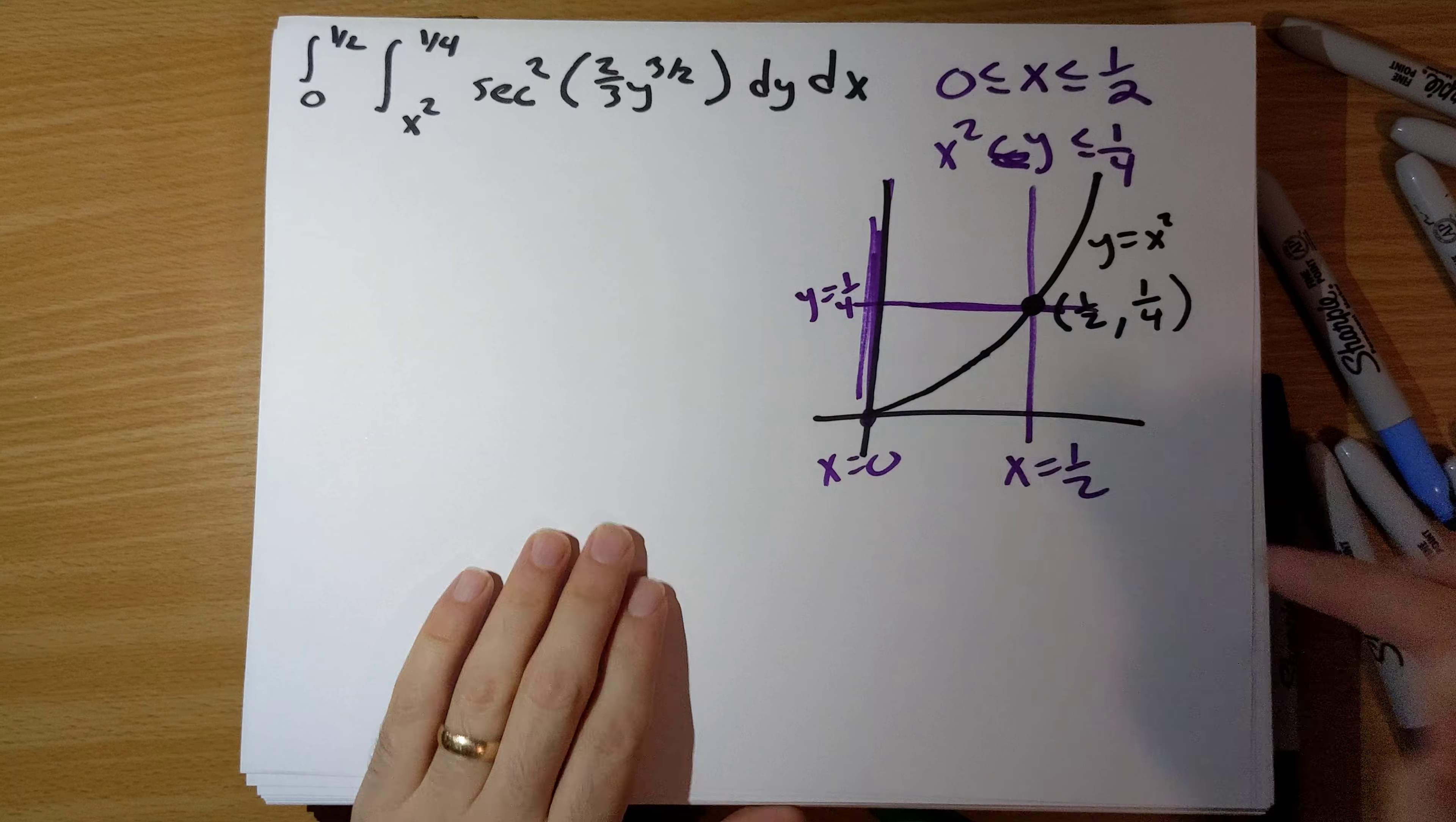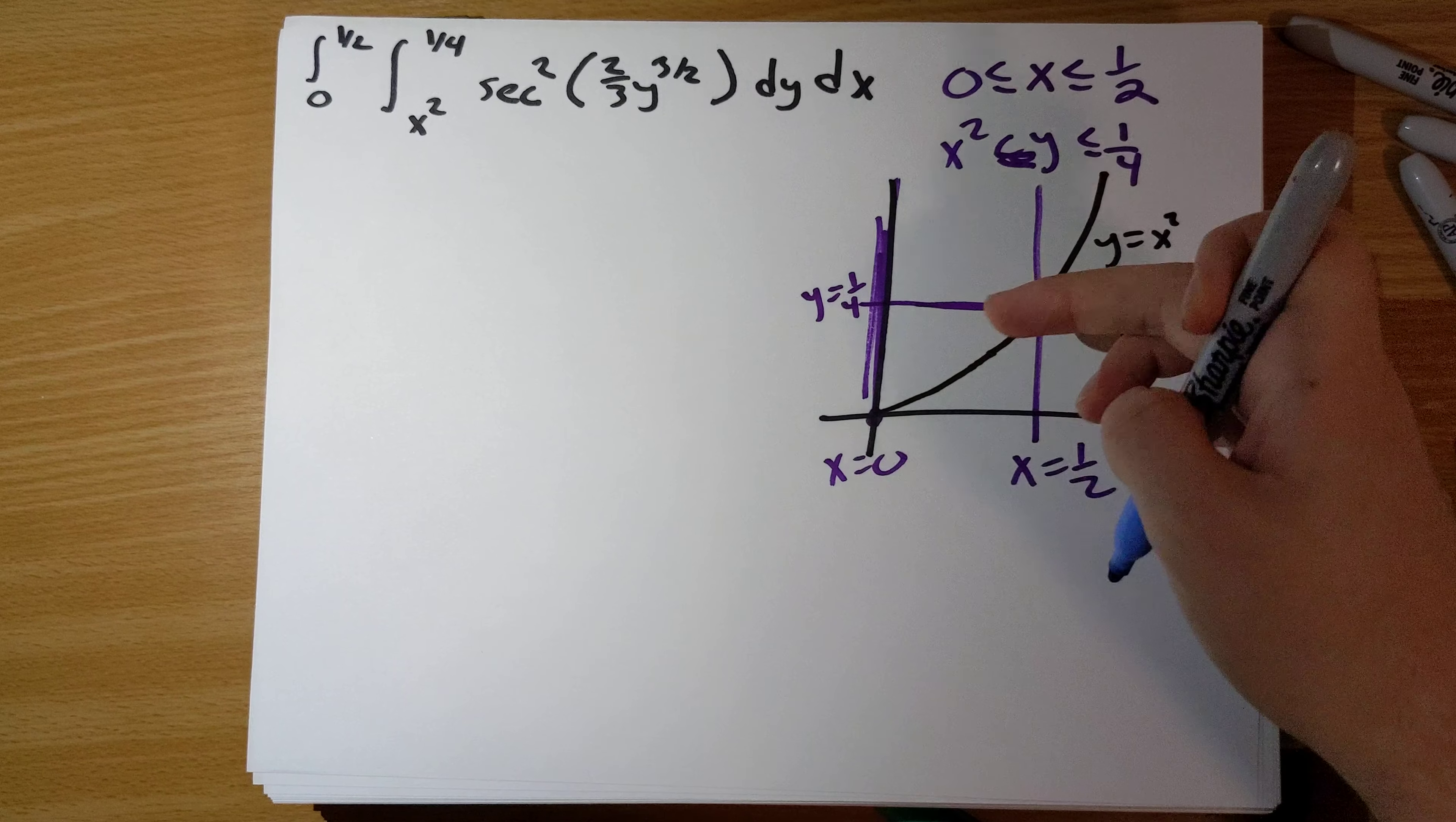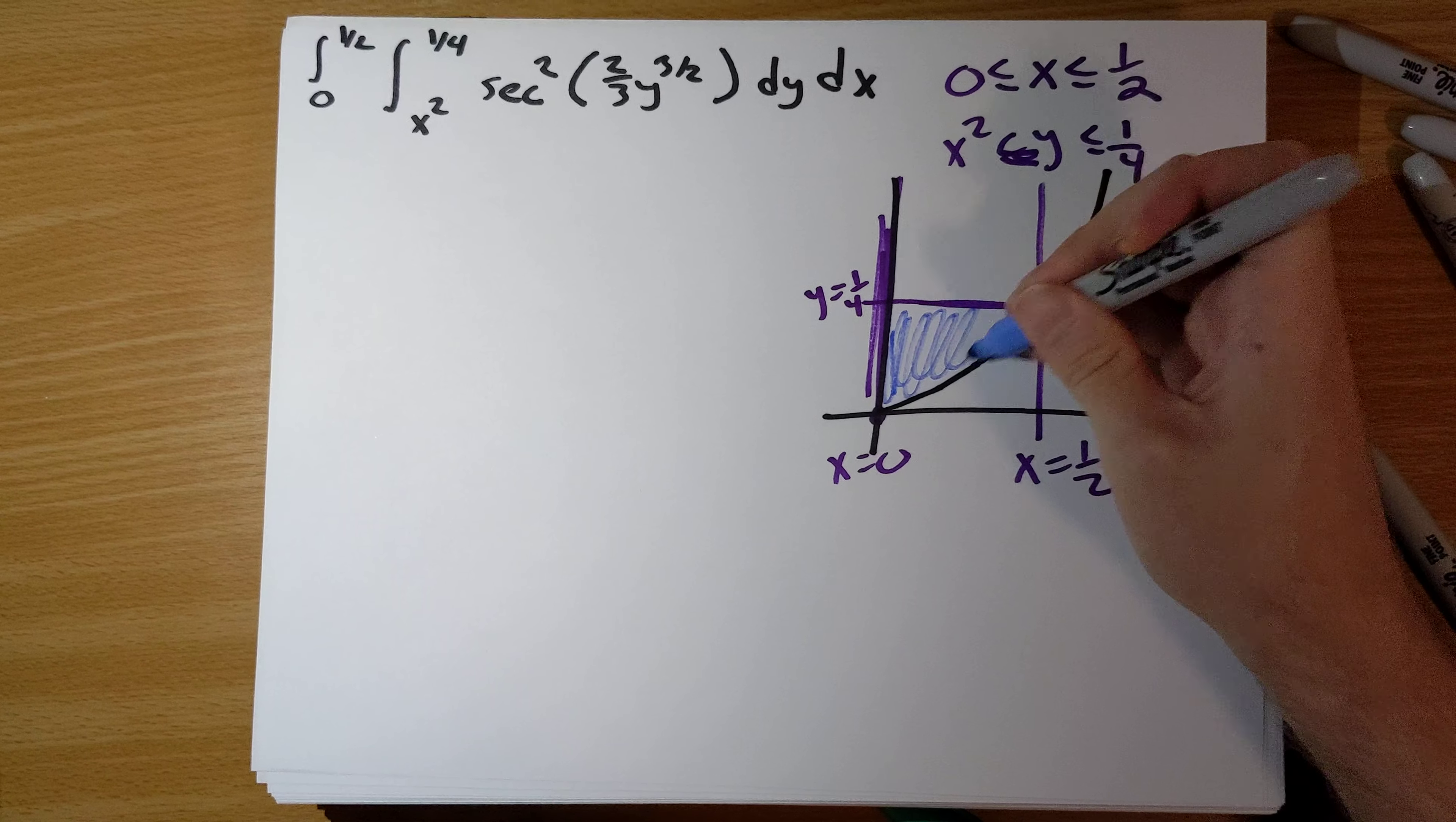Which region are we dealing with? We're dealing with the region where for a fixed value x, y runs from x squared to 1/4. So we're dealing with this region right in here.